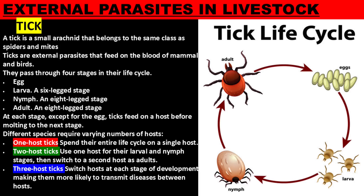A tick is a small arachnid that belongs to the same class as spiders and mites. Ticks are external parasites that feed on the blood of mammals and birds.